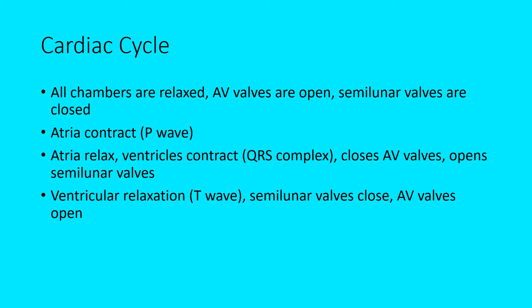Then the atriums are going to relax. When they relax, the AV valves close. The ventricles are going to contract, so your AV valves are closed and now the semilunar valves open due to the pressure difference. As the ventricles contract, they push blood out through the semilunar valves either through the pulmonary trunk or the aorta. On an EKG, this is known as the QRS complex.